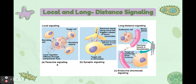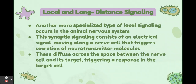Here's a picture of paracrine signaling. We have our secreting cell and our target cell, and the local regulator diffuses through extracellular fluid. A secreting cell acts on nearby target cells by discharging molecules of a local regulator, such as a growth factor, into the extracellular fluid. Paracrine signaling is local signaling.